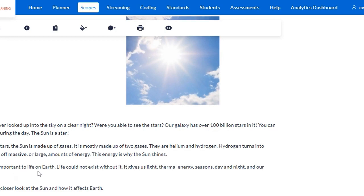The sun is important to life on Earth. Life could not exist without it. It gives us light, thermal energy, seasons, day and night, and our weather. Let's take a closer look at the sun and how it affects Earth.